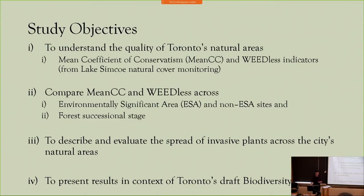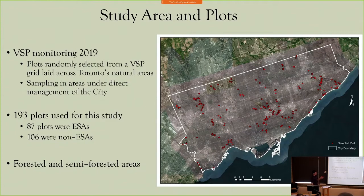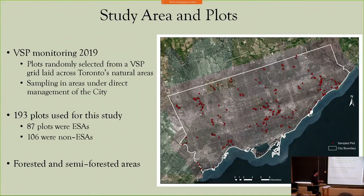In the map on the right, you can see the plots that were sampled throughout this collaborative monitoring project. Plots were randomly selected from a grid laid across Toronto's natural areas. Sampling was limited to public lands or lands directly under the management of the city. There was some stratification in our selection of plots — we wanted to make sure there was a relatively equal balance of ESA plots versus non-ESA plots. In terms of habitat type, we focused predominantly on forested and semi-forested areas.